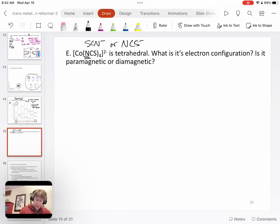So we have four of them. That's four minus. Therefore, cobalt has to be two plus. So now we know the charge on the cobalt ion because that's going to be important to tell us how many electrons the cobalt has. The questions we're asking is what is its electron configuration? Is it paramagnetic or diamagnetic?